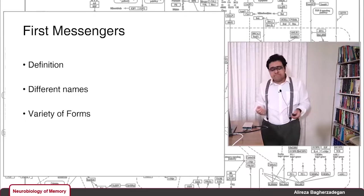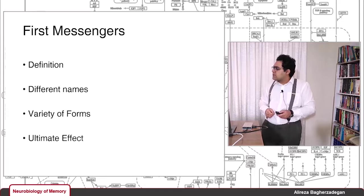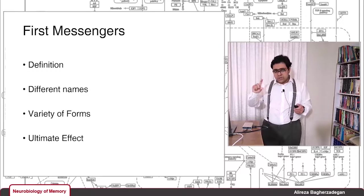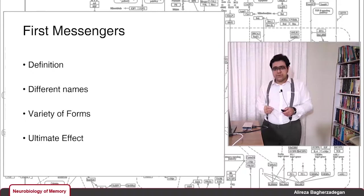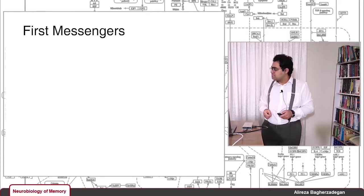First messengers come in a variety of forms — they can be gas molecules, nucleotides, or small or large proteins. One important fact about their ultimate effect: the effect of a first messenger is not defined by the nature of the first messenger itself, but by the anatomical context in which it is introduced, and by the nature or mechanism of action of the receptor that receives it. That's why the same first messenger molecule can be used in different parts of the body and evoke different responses.